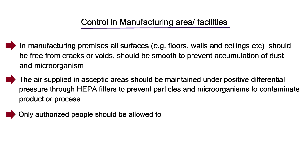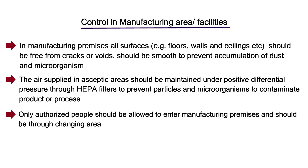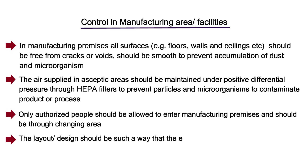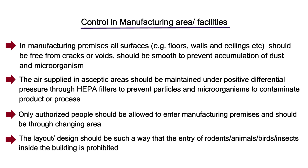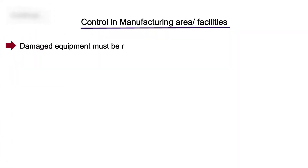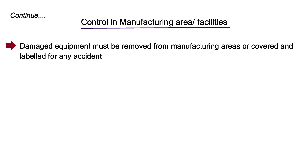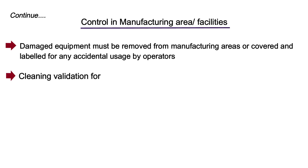Only authorized people should be allowed to enter the manufacturing premises, and entry should be through the change area. The layout or design should be such that the entry of rodents, animals, birds, and insects inside the building is prohibited. Damaged equipment in the manufacturing premises must be removed from manufacturing areas or covered and labelled to prevent accidental usage by operators. Cleaning validation for equipment should be performed properly.